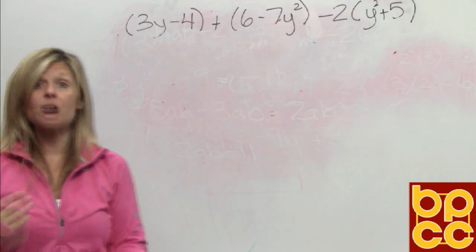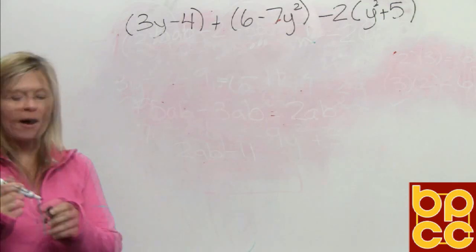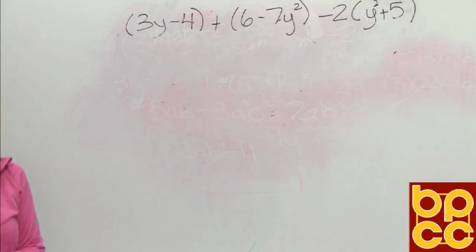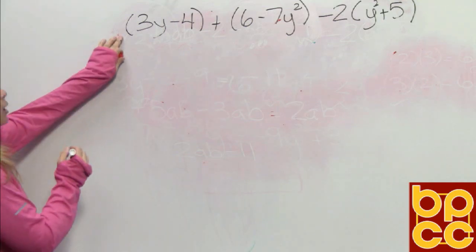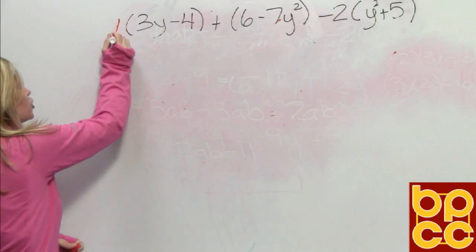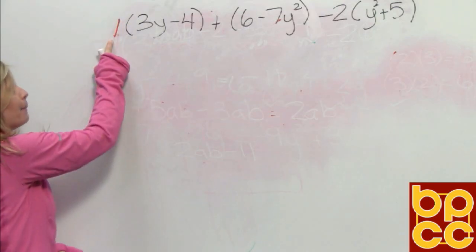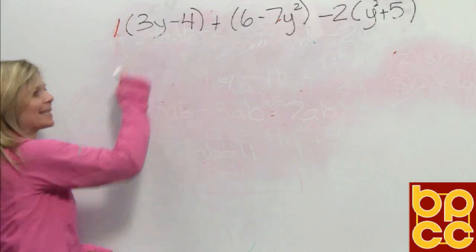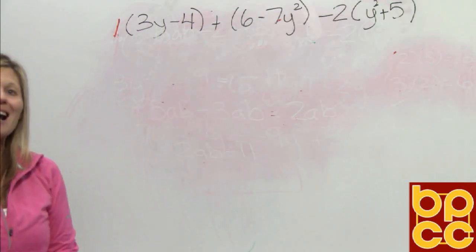And parentheses always means in math, multiplication. In front of every parentheses, there's always a number. And that's the number you're going to multiply by. So if we look at the first set of parentheses, there is no number we see. It's understood to be 1. So we're about to take the 1 and multiply it to just what's inside the parentheses. That is called the distributive property of multiplication.